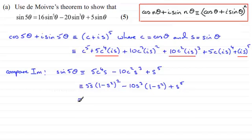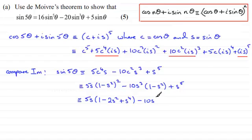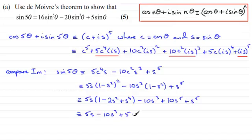Expanding: 5s times (1 − s²)² gives 5s times (1 − 2s² + s⁴), and expanding −10s³(1 − s²) gives −10s³ + 10s⁵. Then we have + s⁵. So expanding fully: 5s − 10s³ + 5s⁵ − 10s⁵ + s⁵.